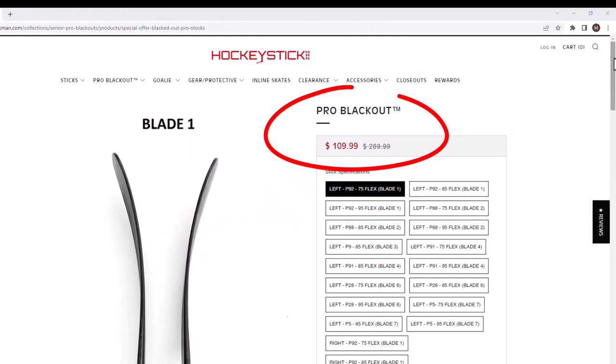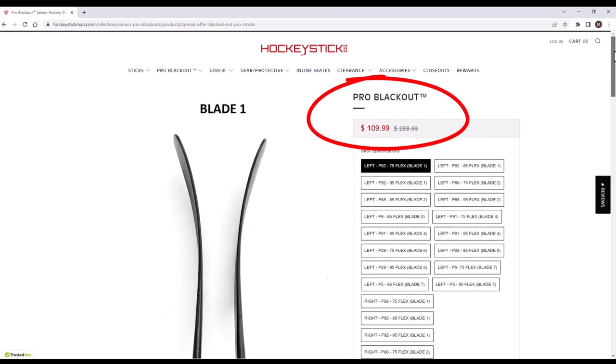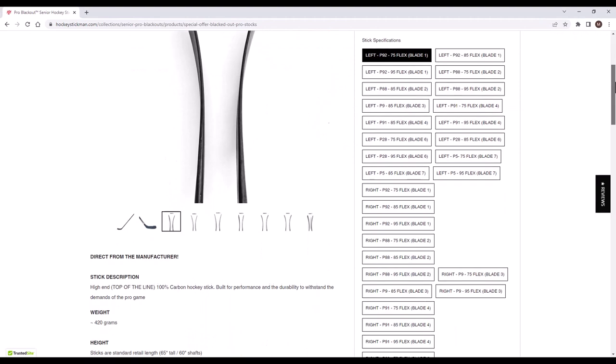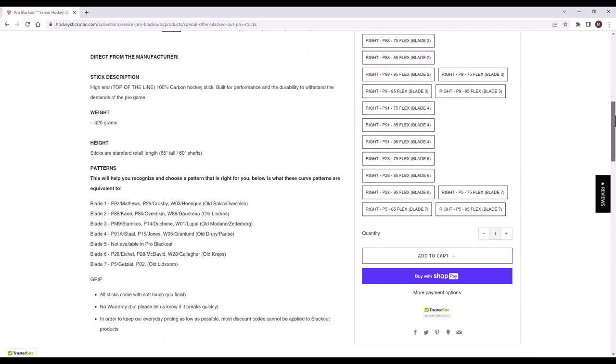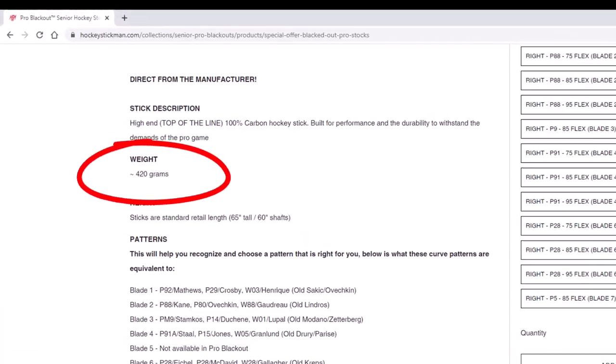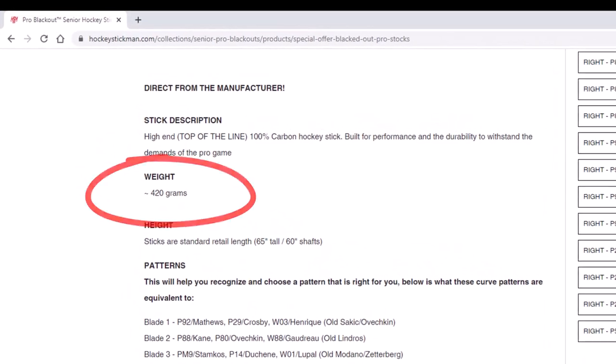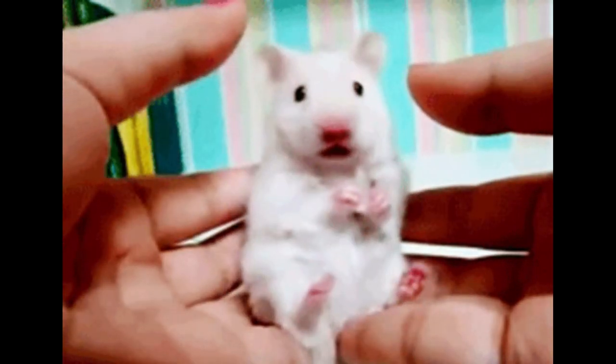Lastly, let's check out the Standard Pro Blackout. This stick is the least expensive Senior Pro Blackout stick at $110 and an amazing value. The Standard Pro Blackout is about 20 grams heavier than the Light stick, so approximately 420 grams total. Again, going with my small rodent theme, that'd be like taping a mouse to a Light stick. But please don't try that at home.